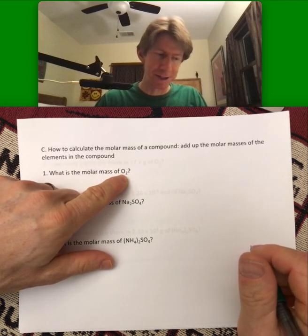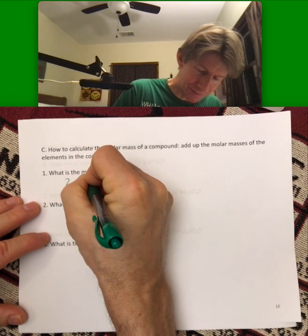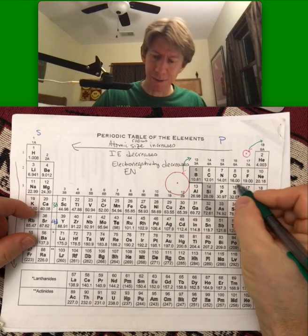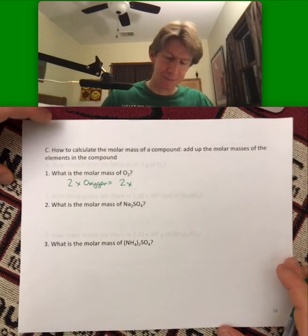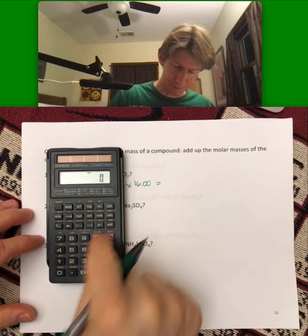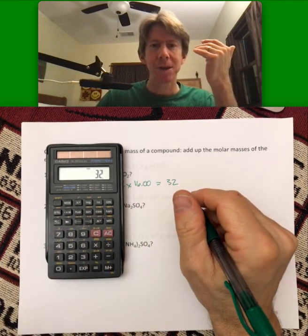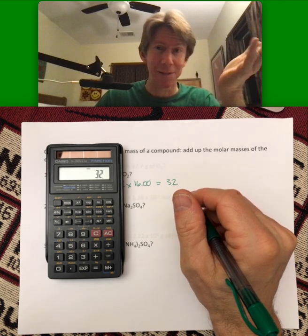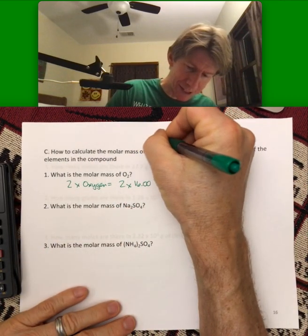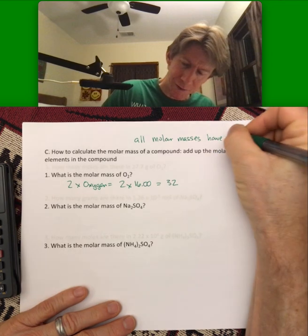So, there are two oxygens here. So, if I were to show my process, it might be 2 times oxygen equals 2 times, go to the periodic table, look at the number under it, 16.00. Come back to your page. Equals 32. And, all of our molar mass, all of our molar masses have four sig figs. Please use four sig figs. Molar mass, all molar masses have four sig figs.